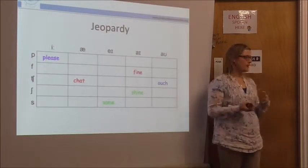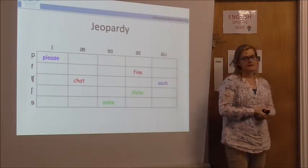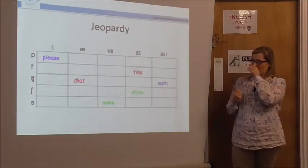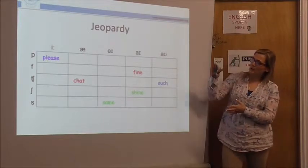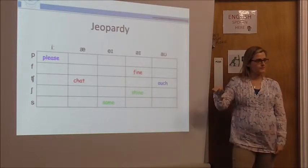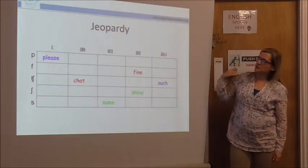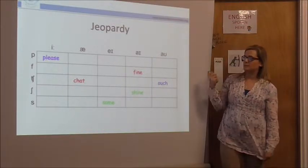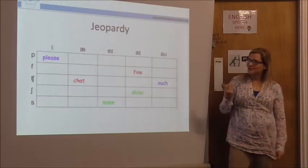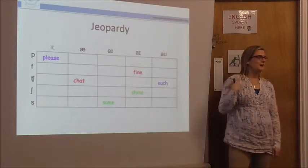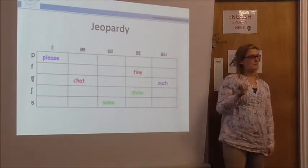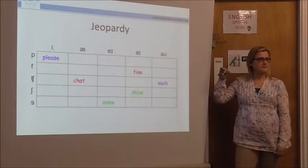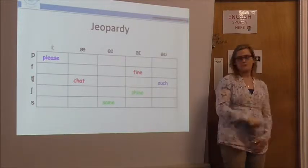The first one — I know we all use Jeopardy for vocabulary with a point system. This is a very simple game: a five-by-five grid, five down and five across. You can choose whichever sounds your learners are having trouble with. For example, p and f for Korean speakers; ch, sh, and s for Spanish speakers; and a selection of different vowels across the top, depending on whatever your learners are struggling with.